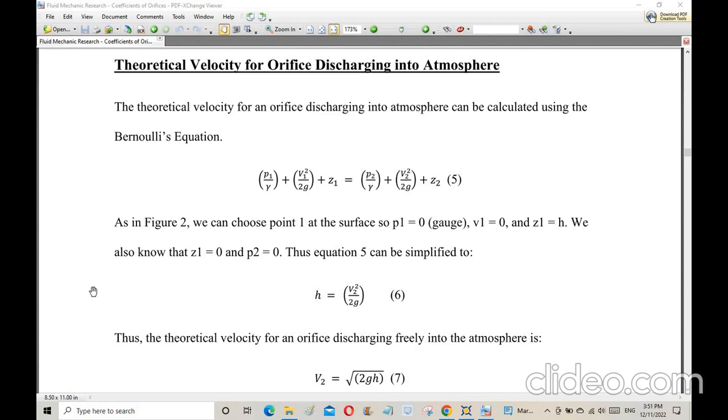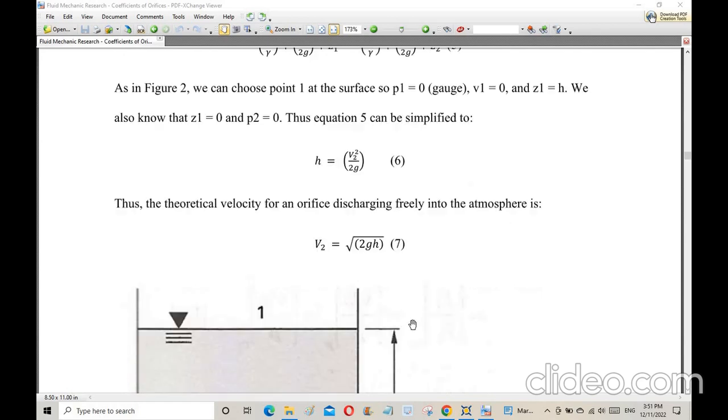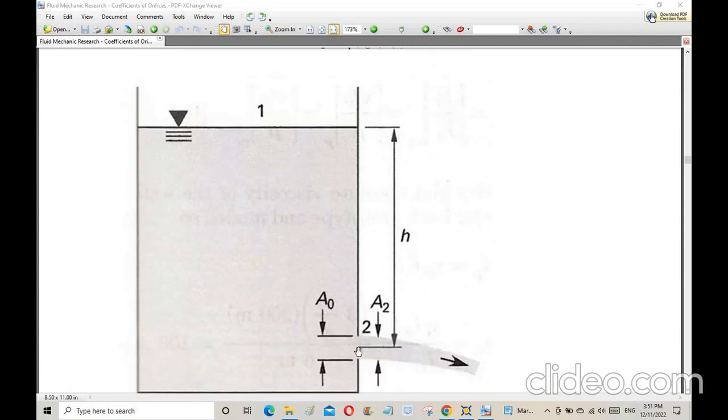In class we already discussed how to use Bernoulli's equation to obtain the theoretical velocity for an orifice discharging freely into the atmosphere. After you simplify everything, you get V equals square root of 2gh, where h is the distance from the center of the orifice to the surface of the water.